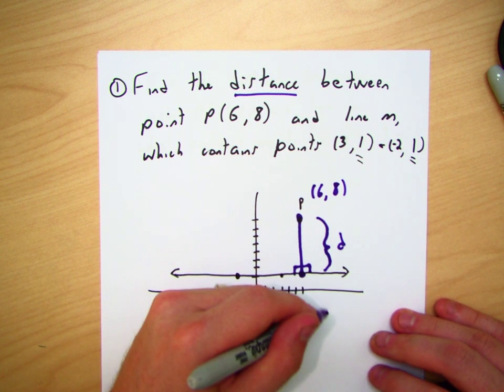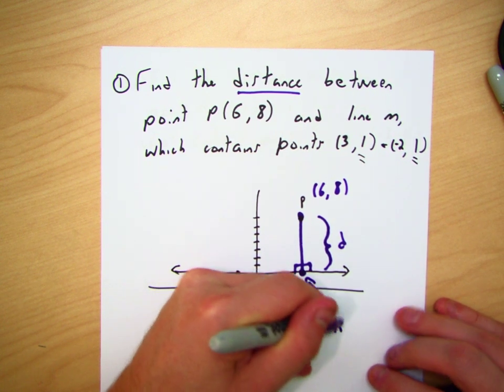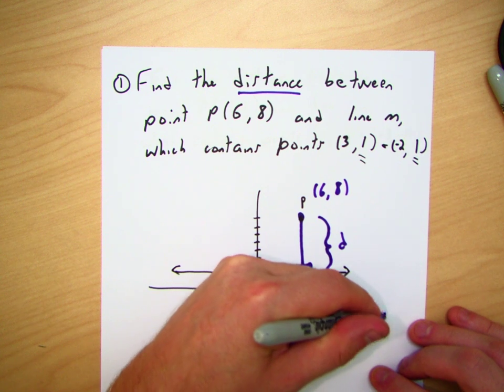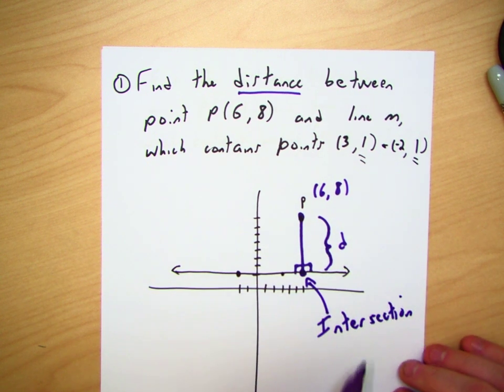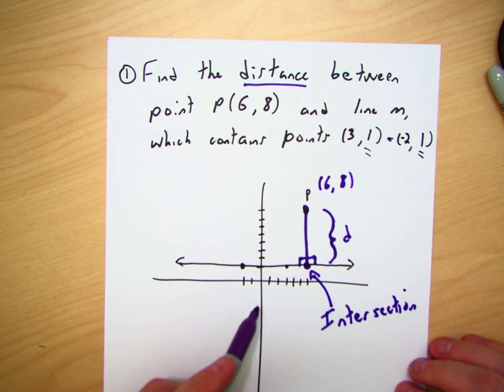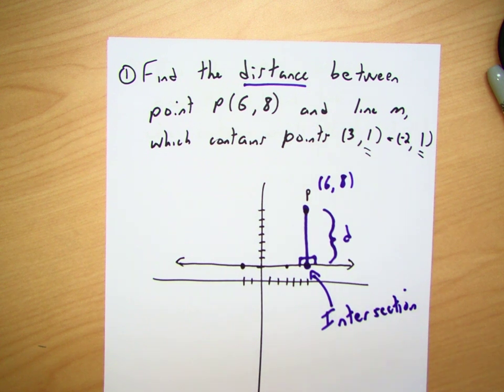What we need to find out is what this point is right here. And that is going to be the intersection. Okay, and that's going to be the intersection of those two points.